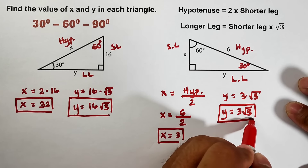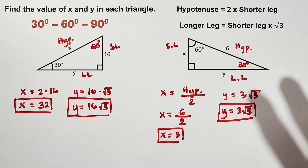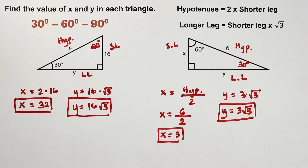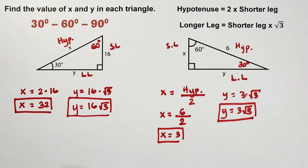I hope you learned something from this video on how to calculate the missing parts of a 45-45-90 and a 30-60-90 special right triangle. If you're new to my channel, don't forget to like and subscribe and hit the notification bell to be updated on the latest uploads. Again, it's me, Teacher. Maraming salamat! Bye!